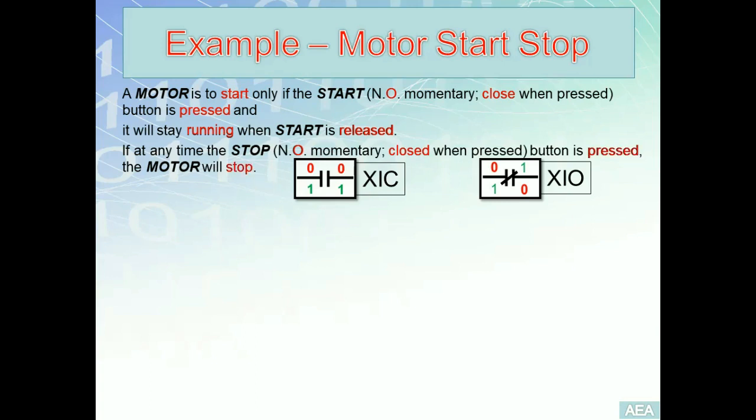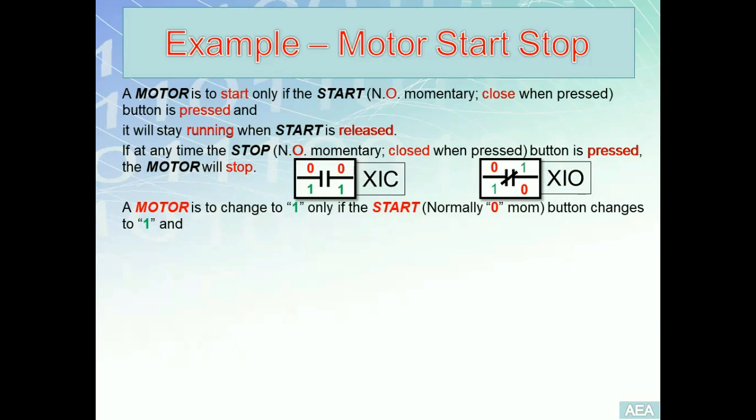After highlighting these terms, I'm going to divide this problem into minor requirements and start solving. The first requirement is: a motor is to change to one (start) when start, which is normally zero, changes to one. That is the first requirement. I will now start building my ladder solution to fulfill this requirement.